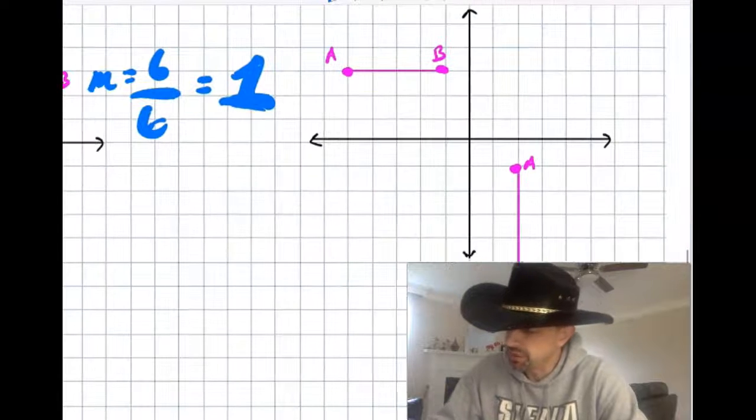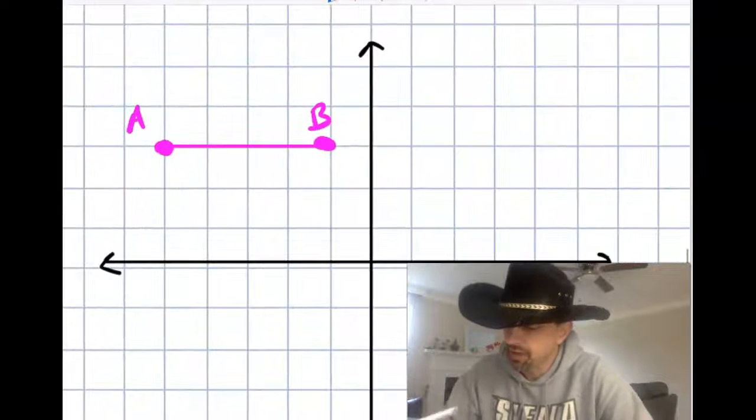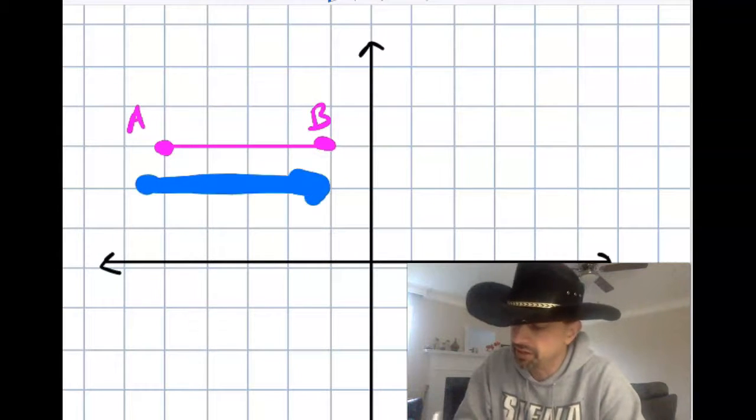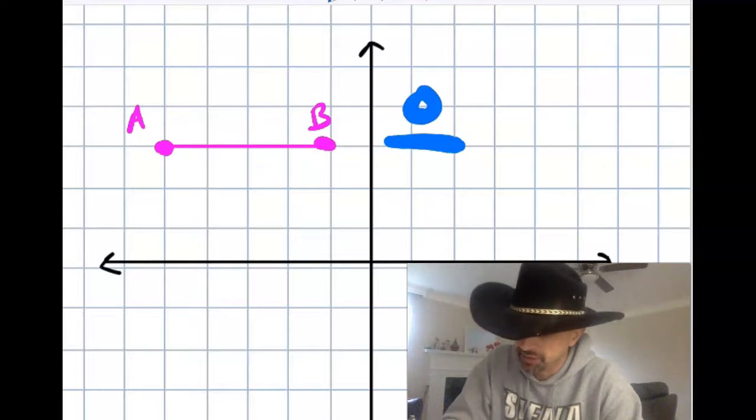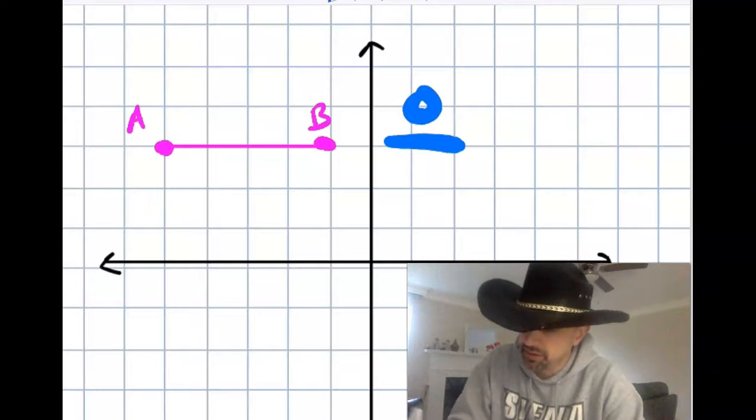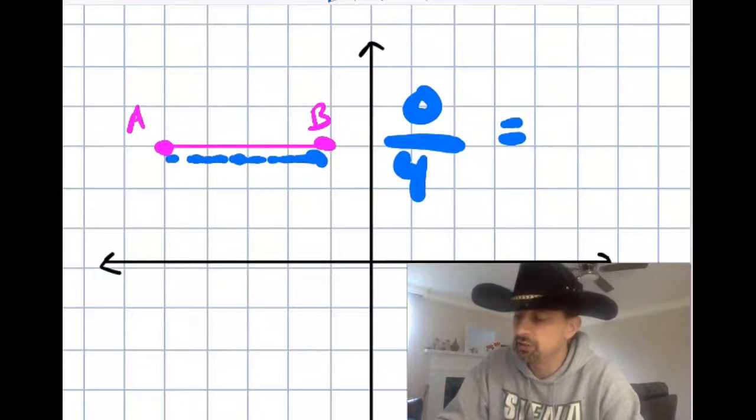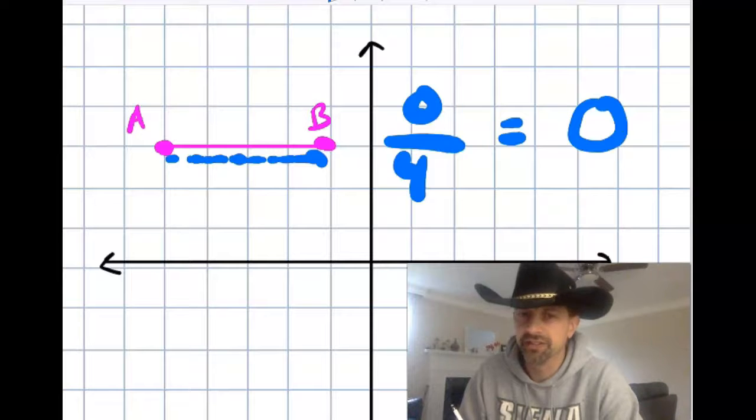Now these two are special in case they ever come up. A horizontal line to get from here to here, I go up or down 0. Right? Because you don't go up or down at all. And then over 1, 2, 3, 4. But 0 over anything is 0.